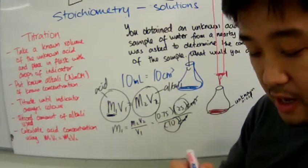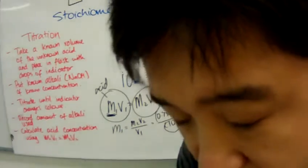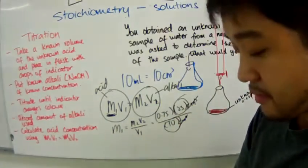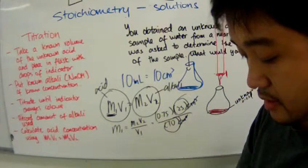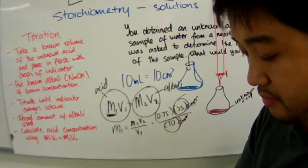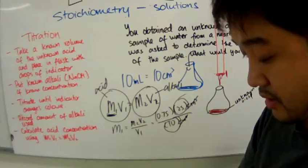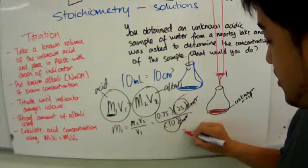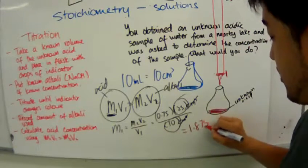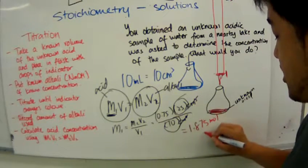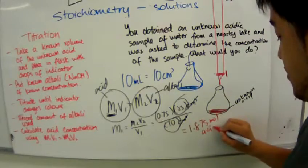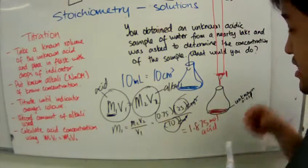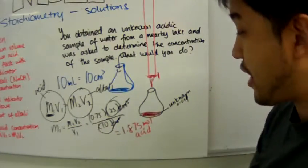So if I were to calculate this, it would be 0.75 multiplied by 25 divided by 10. It would be 1.875. So the concentration of the acid will be 1.875 moles of that acid.